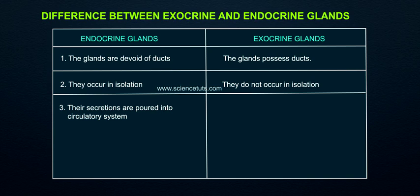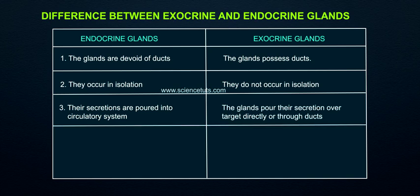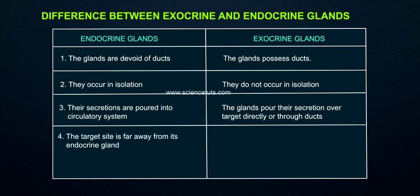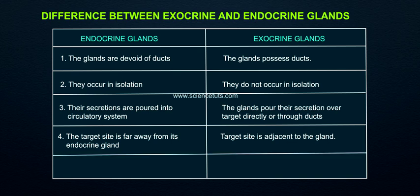Point 3: Secretions of endocrine glands are released into the circulatory system. Point 4: Endocrine glands deliver their secretions to target sites through the bloodstream, whereas exocrine glands deliver secretions directly or through ducts. Point 5: The target site is far away from the endocrine gland, whereas for exocrine glands the target site is adjacent to the gland.